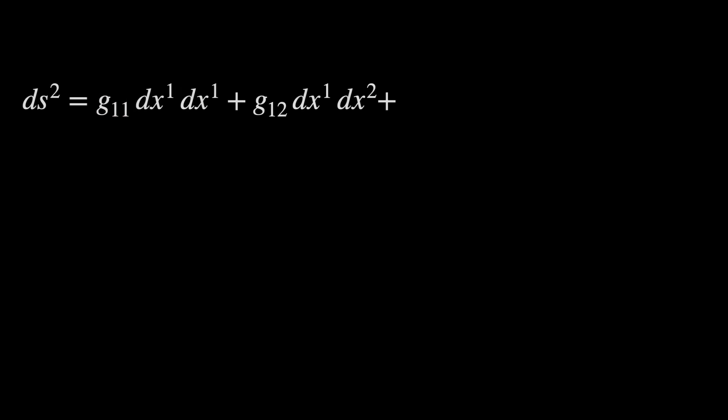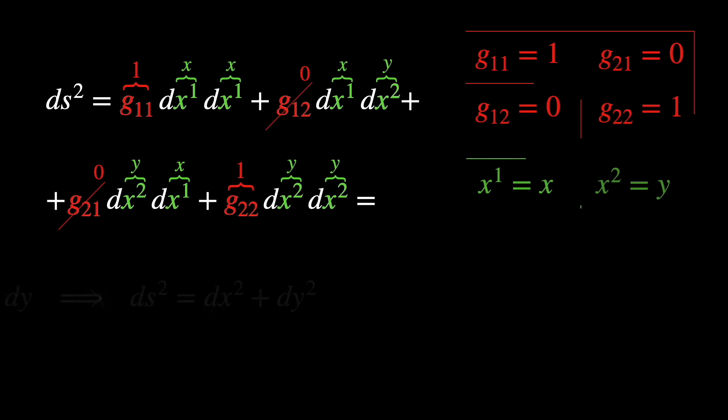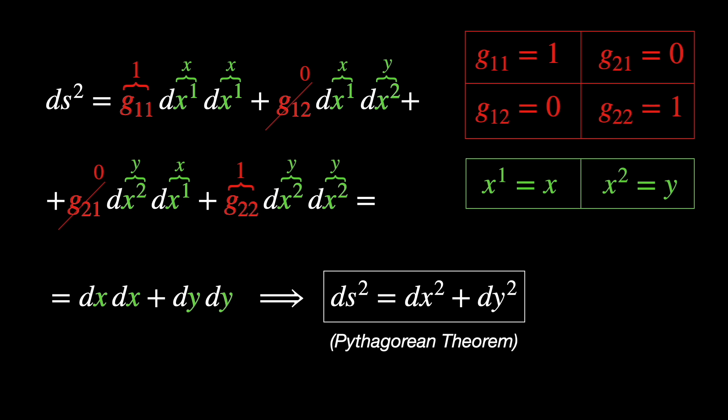So, applying the summation convention for these components, we get that the metric can be written as dx squared plus dy squared.